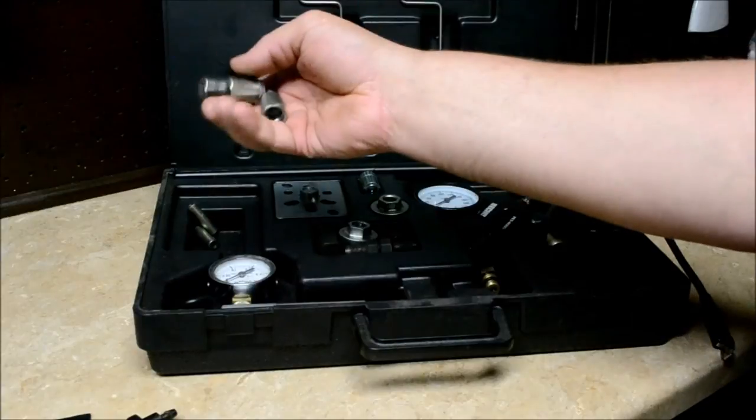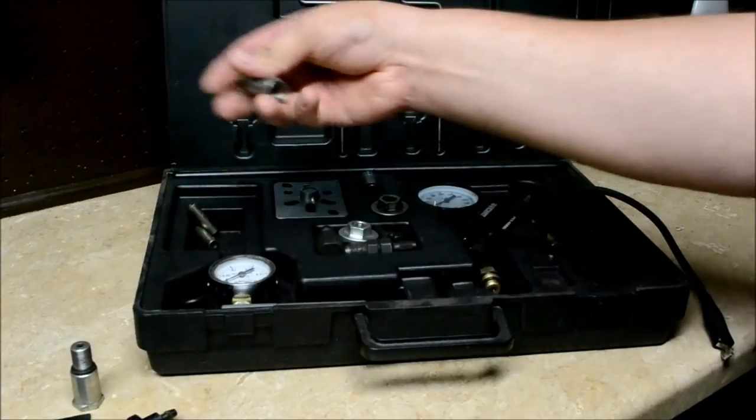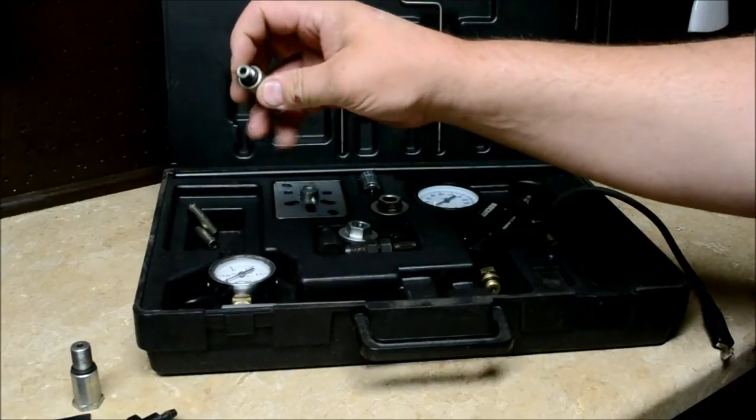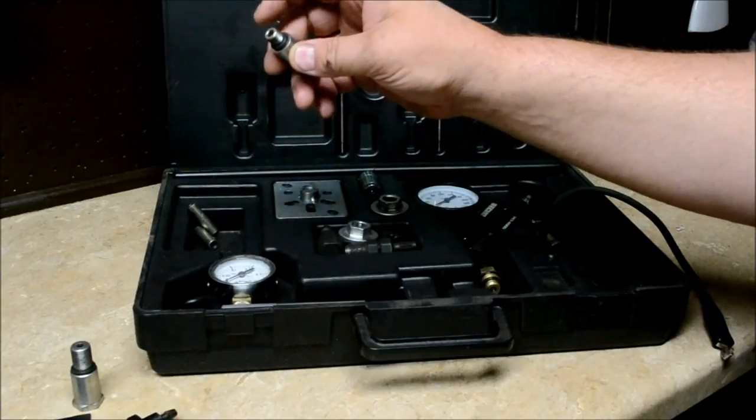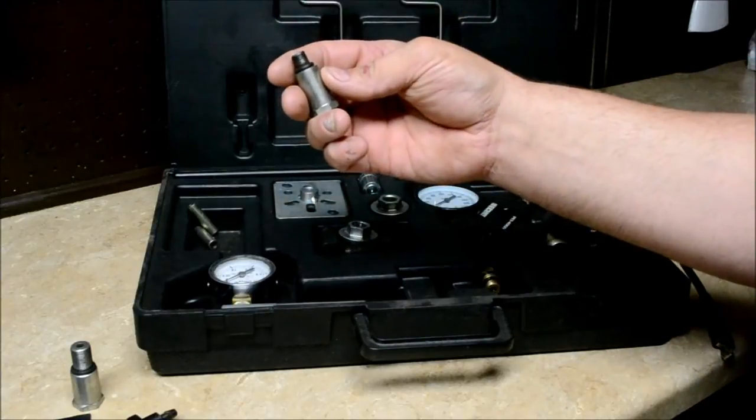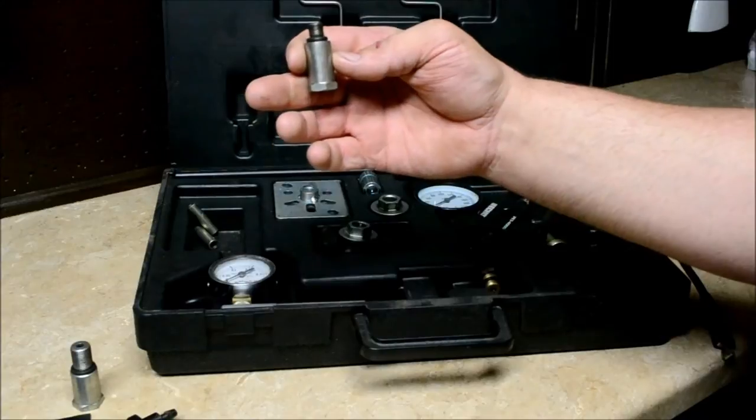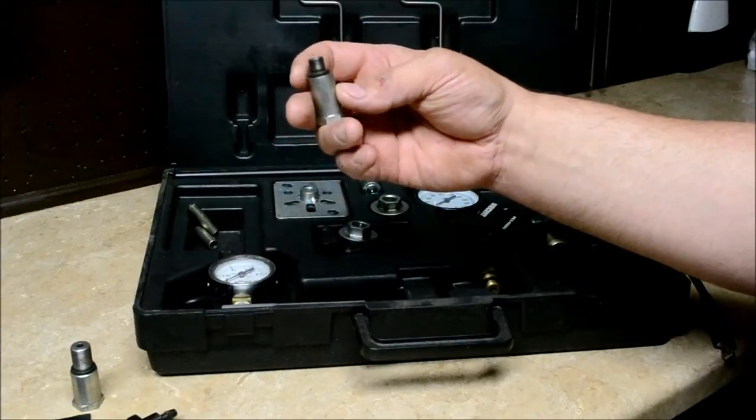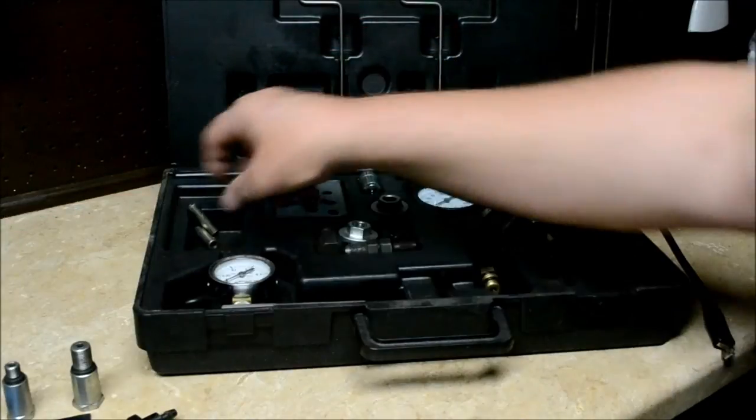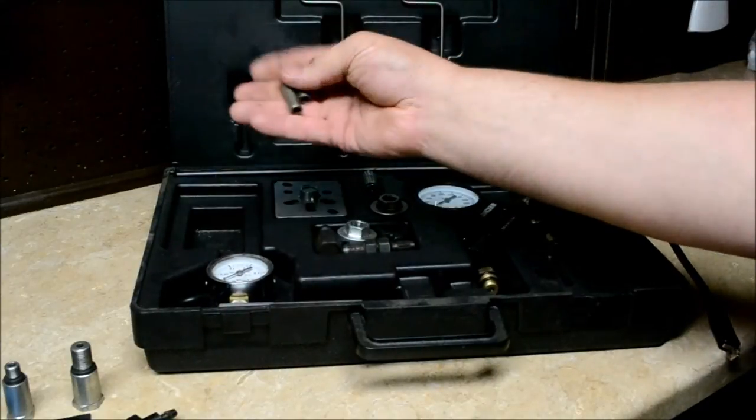Spark plug adapters: 14 millimeter to the small Stihl spark plug, I think it's 12 millimeter spark plug threads on some of that stuff. Don't quote me on that. If you know, put a comment below. Carburetor spacers to take up the slack of the carburetor whenever you're doing your pressure test.